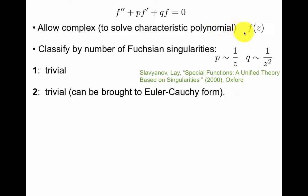So it's convenient to allow complex variables even if you were only interested in real variables. We classify ODEs by the number of Fuchsian regular singularities, which means p is no worse than 1/z and q is no more singular than 1/z². If you have one Fuchsian singularity the equation is trivial. If you have two, it's also trivial because it can be brought to Euler-Cauchy form that can be transformed to constant coefficients.